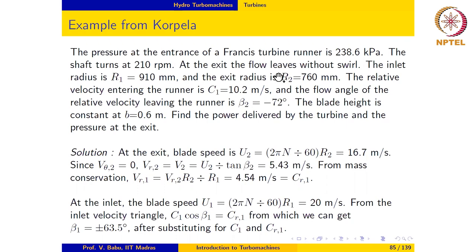At the exit, the flow leaves without swirl. The inlet radius is R1 equal to 910 mm and the exit radius is R2 equal to 760 mm. The relative velocity entering the runner is C1 equal to 10.2 m per second and the flow angle of the relative velocity leaving the runner is β2 equal to minus 72 degrees. The blade height is constant at h equal to 0.6 meters.